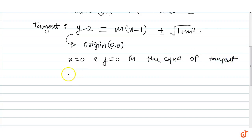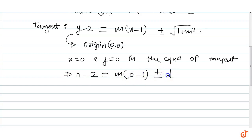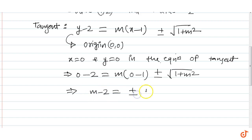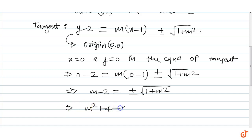तो अगर (0,0) इस equation में रखे तो यह solve होके आ जाएगा: 0 - 2 = m(0 - 1) ± √(1 + m²), which gives m - 2 = ± √(1 + m²). Squaring both sides we will get m² + 4 - 4m = 1 + m².